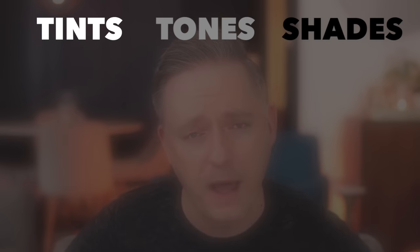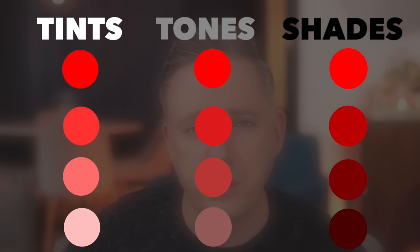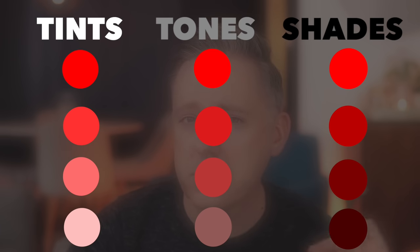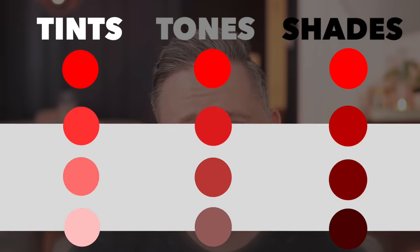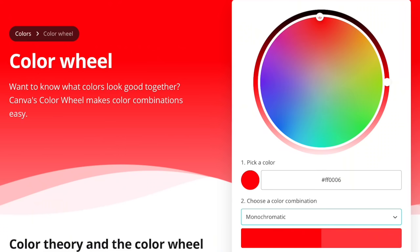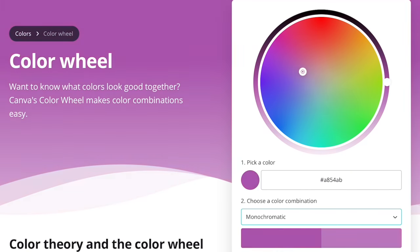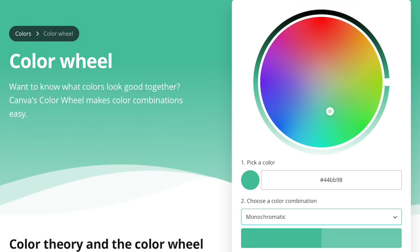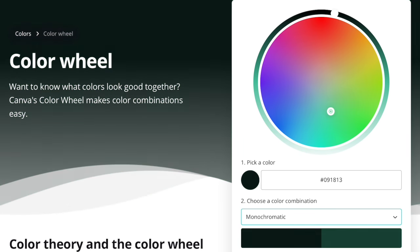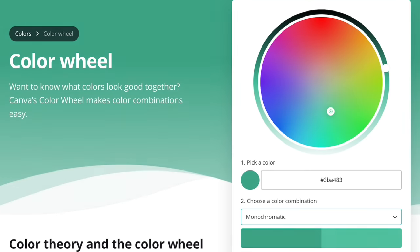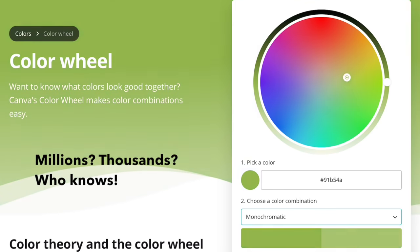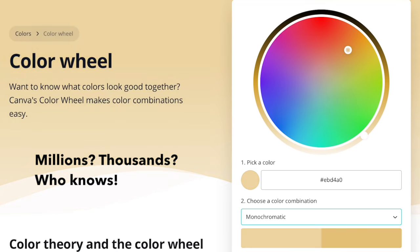When we talk about different color palettes and schemes, it's crucial to understand we don't just mean combining primary colors — we're talking about all the tints, tones, and shades that exist within the color wheel. When you look at all those slices of pie around the color wheel, you start to see there are actually millions of colors to choose from. There are thousands of different colors within just two colors like blue and orange.